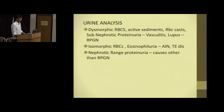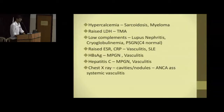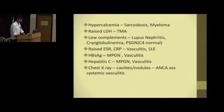On urine analysis, dysmorphic RBCs indicate glomerular origin, while isomorphic RBCs suggest thromboembolic disease or acute interstitial nephritis. Nephrotic-range proteinuria suggests other causes. Hypercalcemia is seen in myeloma or sarcoidosis. Raised LDH is seen in thrombotic microangiopathies. Low complements suggest lupus nephritis, PSGN, or cryoglobulinemia. Raised ESR and CRP suggest vasculitis. HBsAg and hepatitis C can cause membranoproliferative glomerulonephritis. A chest X-ray can look for lung involvement or cavities.